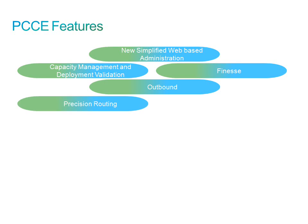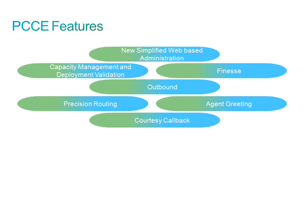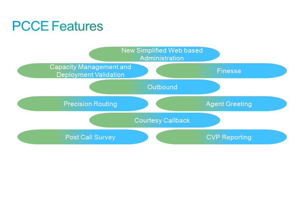Additional features include precision routing, which provides more granular routing based on agent attributes and proficiency levels; agent greeting, a pre-recorded greeting presented to the caller directly before the call is connected; courtesy callback, which allows a caller to be placed into a queue, disconnected, and then called back when an agent becomes available; post-call survey, an IVR script for post-call customer satisfaction surveys; CVP reporting for historical reporting; and predefined base configuration, which reduces install time and configures fixed aspects of the deployment.